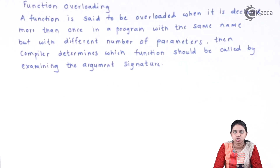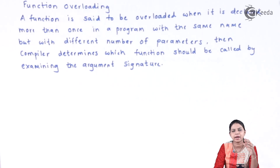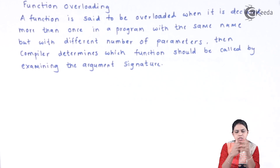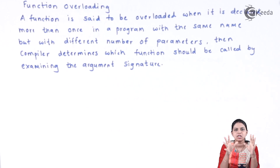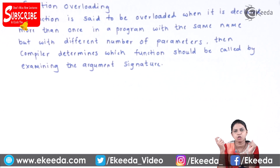The next topic is function overloading. A function is called an overloaded function when it is declared more than once in a program with the same name but with a different number of parameters. For example, suppose in a program I have a function called area, and that area function is declared more than once — then I call that function an overloaded function.